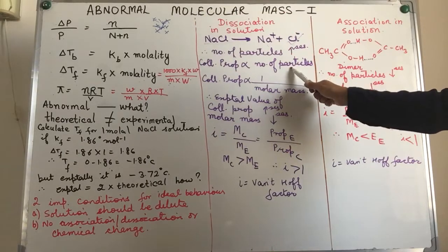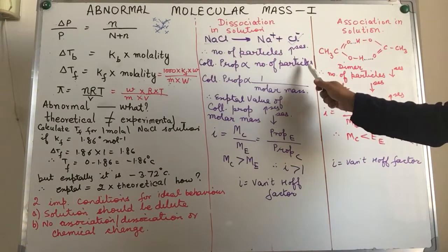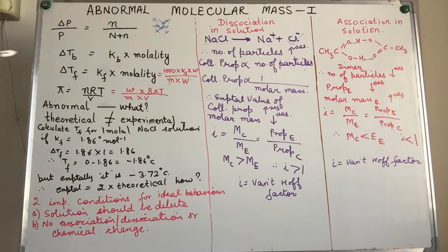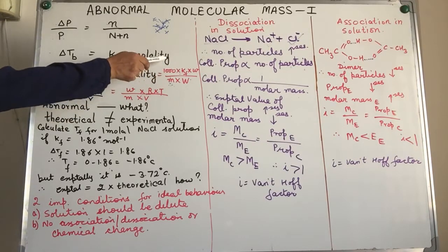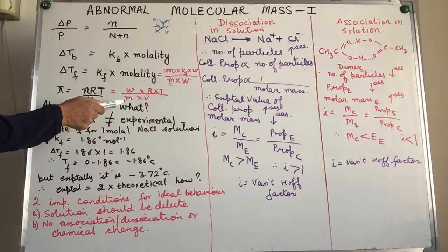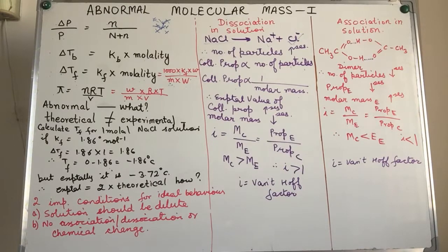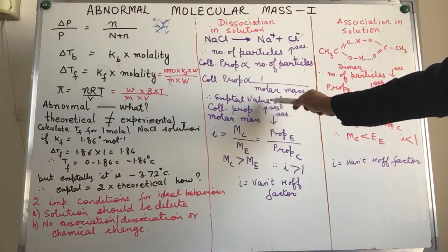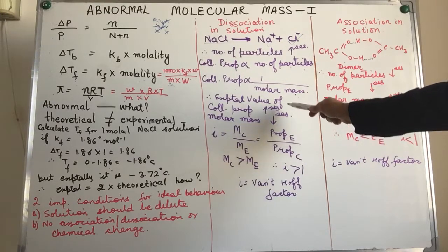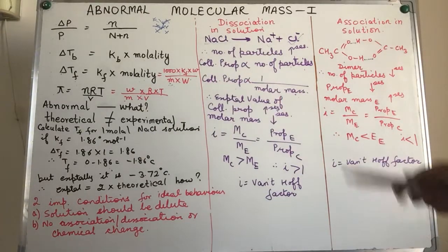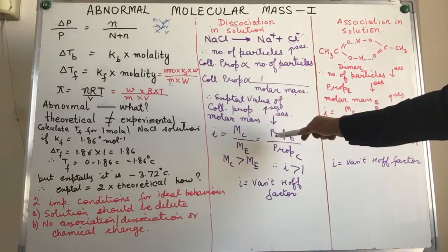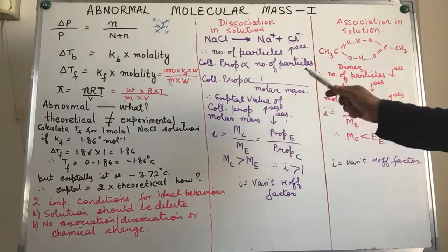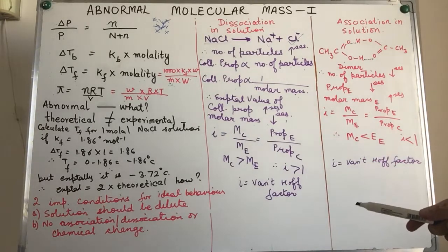Since colligative properties are dependent on the number of particles, the value of that colligative property also increases. Colligative property is inversely proportional to molar mass, as seen in the expanded formula — this applies to Kb, Kf, and osmotic pressure alike. Therefore, the experimental value of the colligative property will be more than what you calculated, and consequently the molar mass of the non-volatile solute measured using any of these properties will be lower than the actual value. This is called abnormal behavior in the case of dissociation.